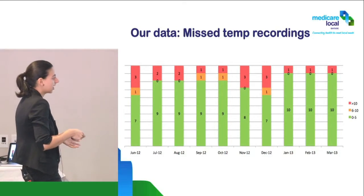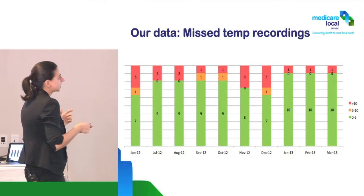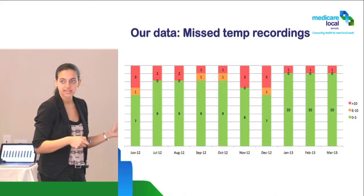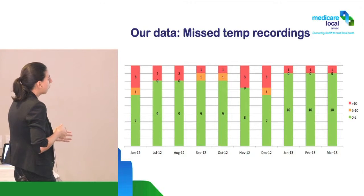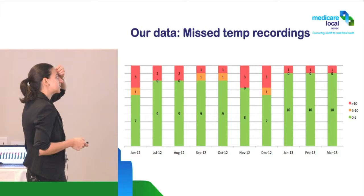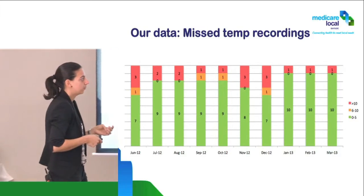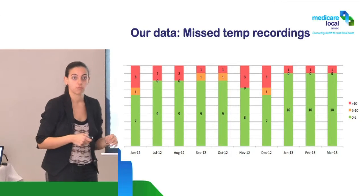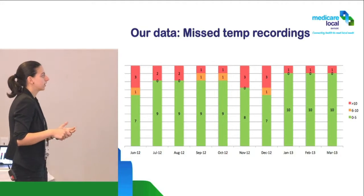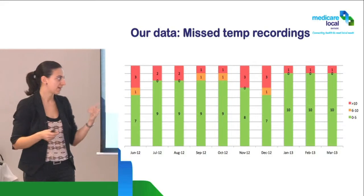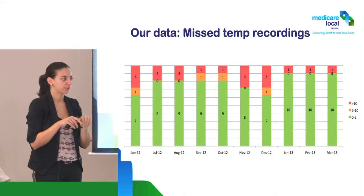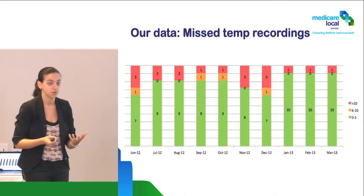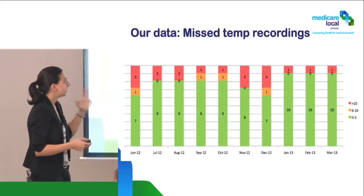So from June through to March — the last 10 months — most practices had 0 to 5 days missed where they didn't record temperatures. Only 1 practice in various months missed between 6 and 10 days, and between 1 and 3 practices didn't have records for more than 10 days in those months. This is a good one to take back to your practice: look through your last 10 months and ask how many days have you missed — and can you even find those sheets? Because some places couldn't find them, and if you can't find it, it's almost as good as not having done it.